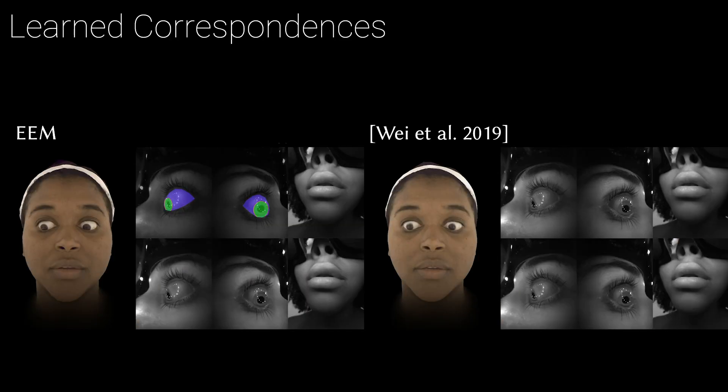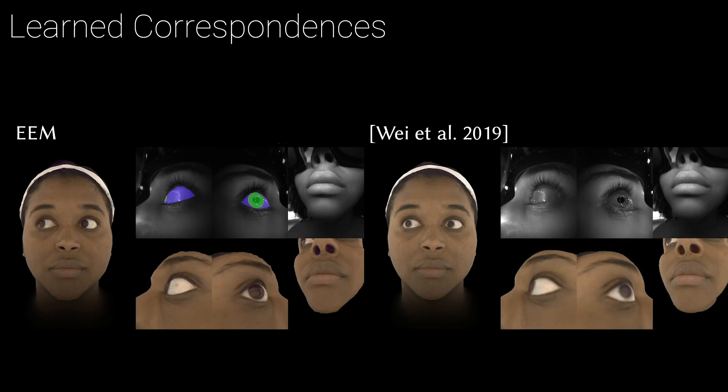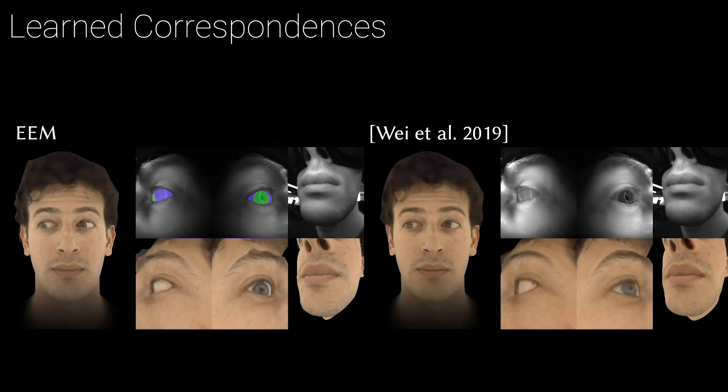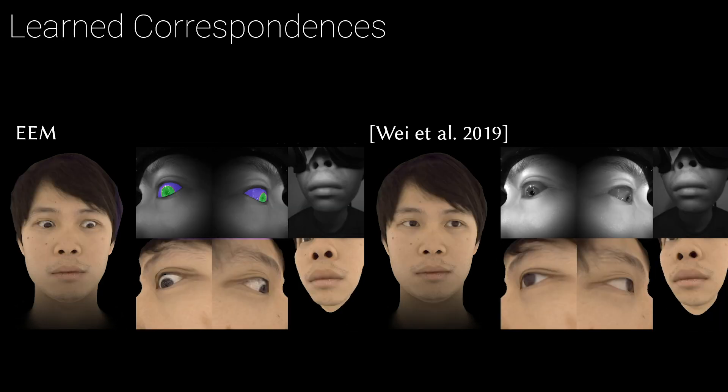Here we show some of the correspondences learned via our model. We swap between images of the rendered avatar and images of the headset to show alignment. We compare against a previous method which uses generative adversarial networks to perform style transfer between the domains using a simpler deep appearance model-based approach. Our explicit eyeball geometry generalizes better and aligns the eyeball much more precisely to the images in the headset.